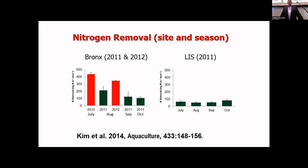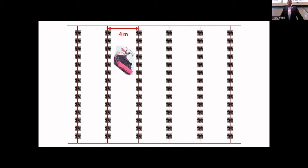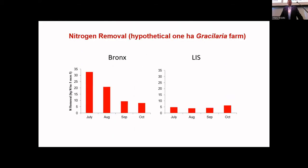When we look at the spacing of lines, if we develop our seaweed farming systems with long lines spaced about four meters apart — and today we've done work at one meter apart, which is even better — you get significant production. The amount of nitrogen removal per hectare at 6.5% per day gave high levels of growth in July, a little less in August, less in September, and still significant in October. Long Island Sound was more consistent because the nutrient levels are much less there.